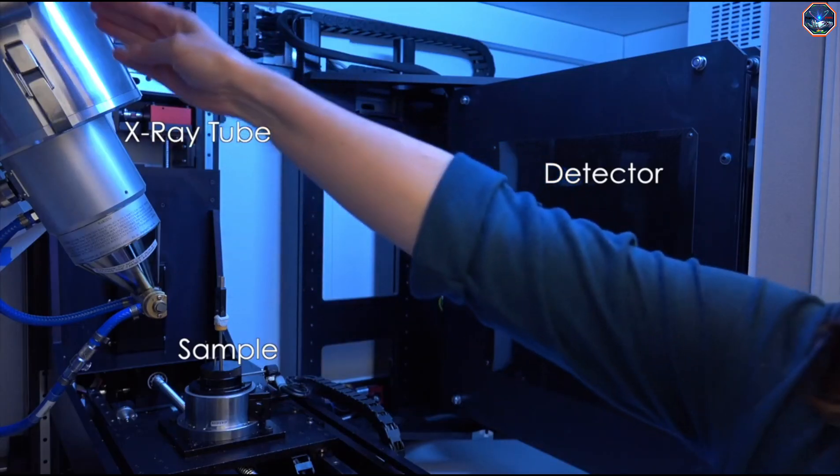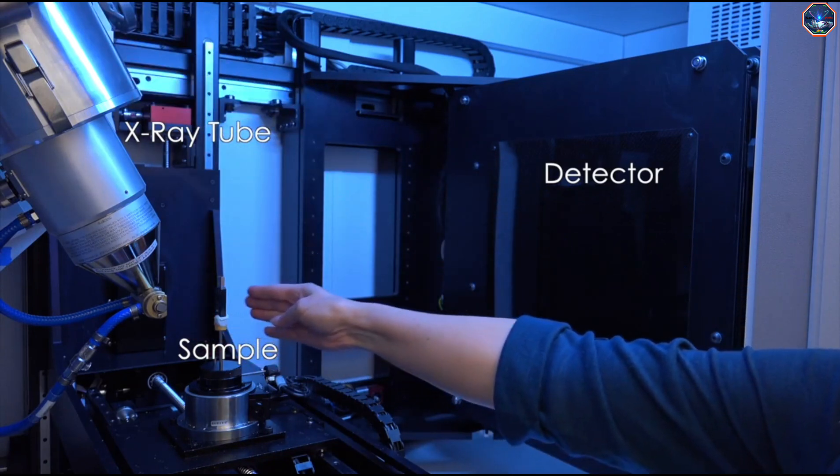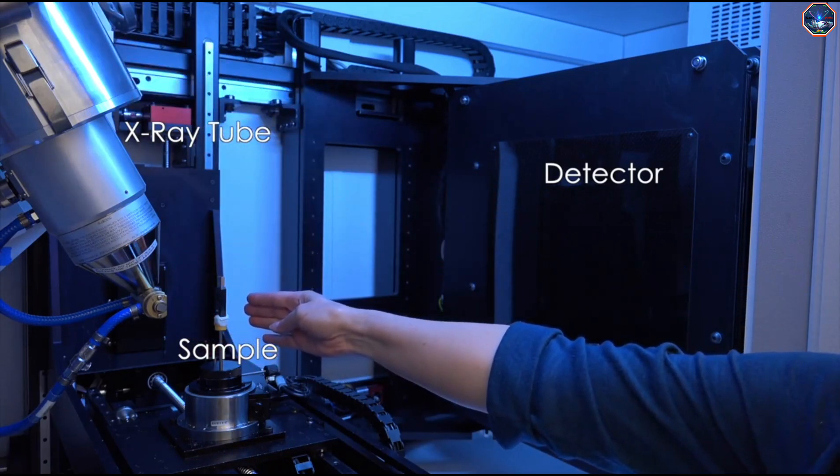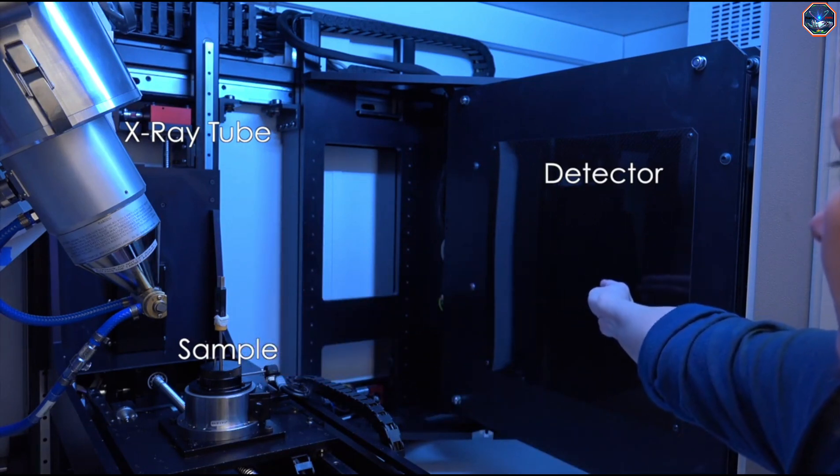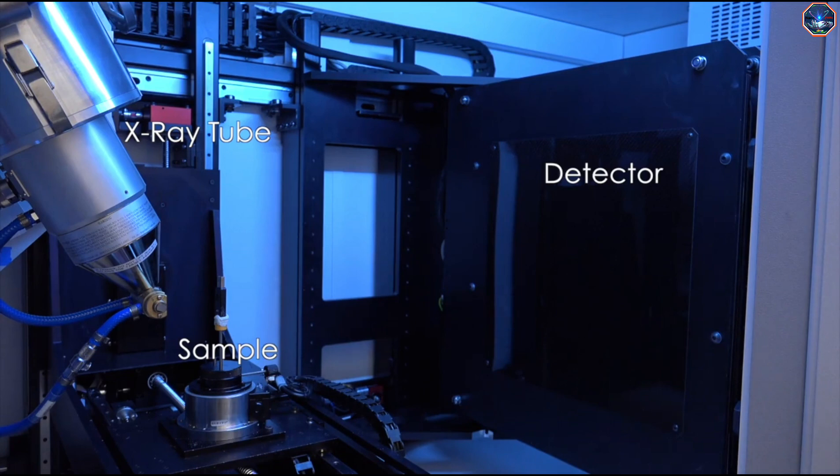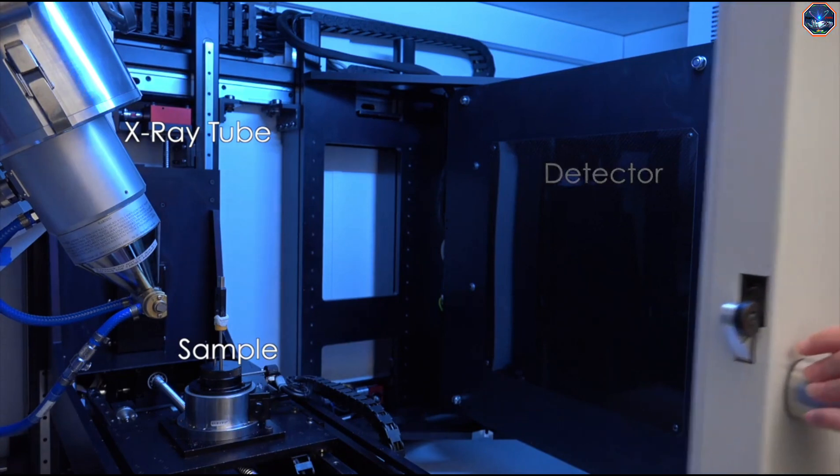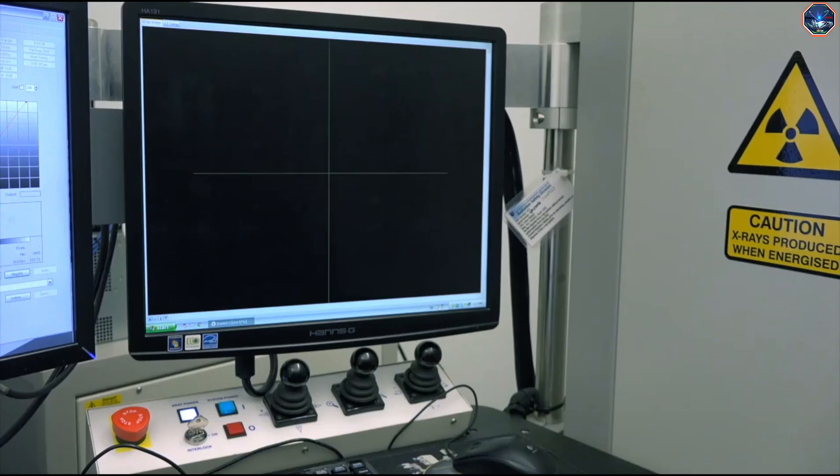When the x-rays reach the sample, some are absorbed by the sample and some are transmitted through to a detector. The detector is like a digital version of film and sends the image information directly to the computer monitor.